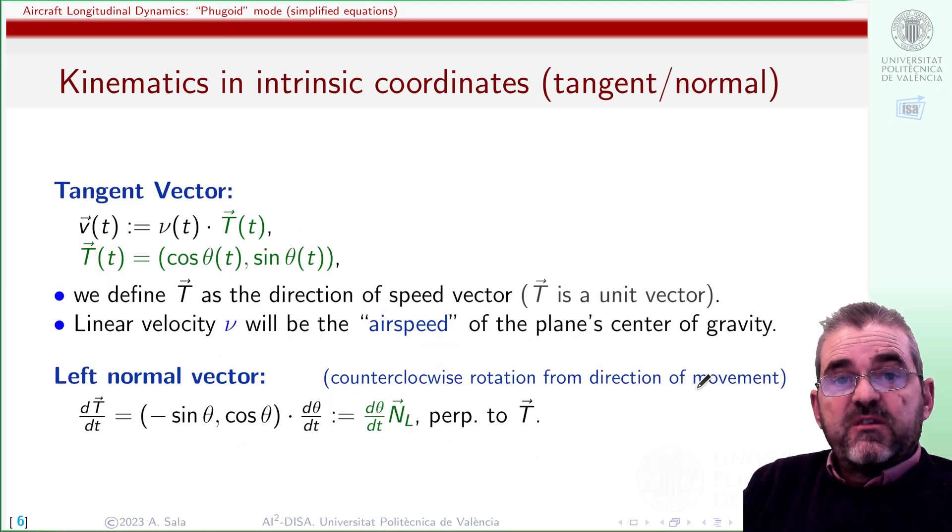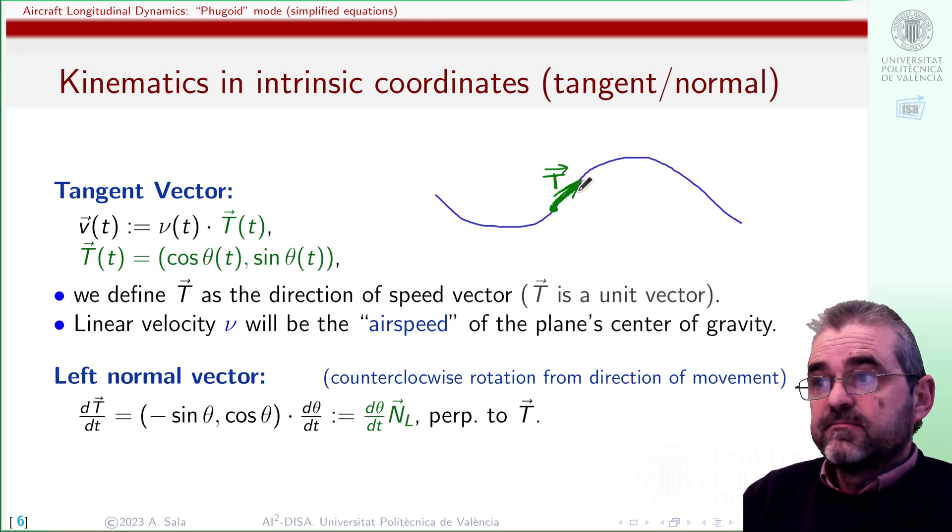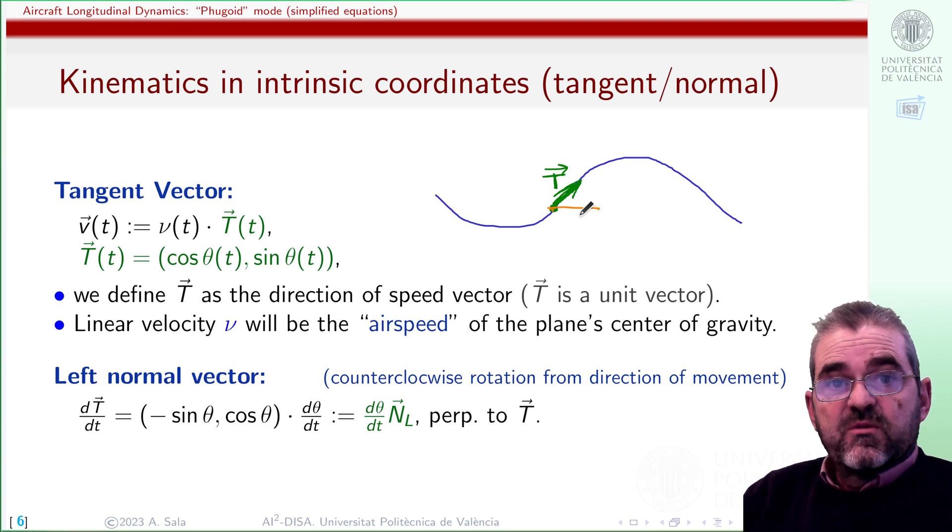First, let us review the dynamics in the tangent normal coordinate frame. There is another video with further detail on these aspects, but we are going to quickly summarize it. If I am following a trajectory with a given velocity, the direction of the velocity, the unit vector in such direction, will be the tangent vector to the trajectory. It will have some orientation with a horizontal line. We will denote it as θ.